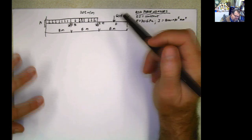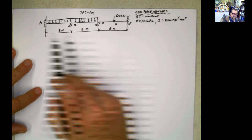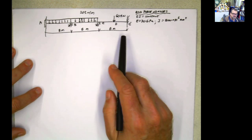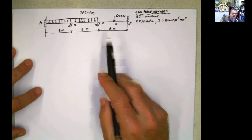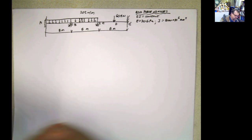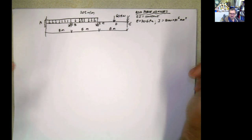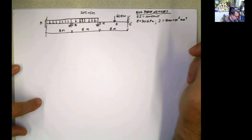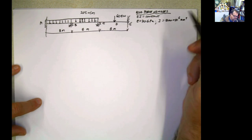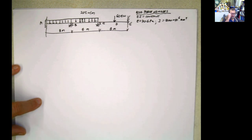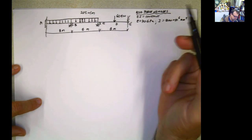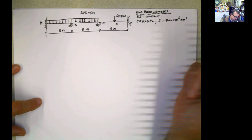Hello guys. This is the first example that we're going to solve using the method of moment distribution. We did this before in slope deflection, and it took like a good three, four pages to solve. First, remember you have to identify if it's statically determinate or indeterminate. If it's determinate, we don't need this. If it's indeterminate, then we can use it.